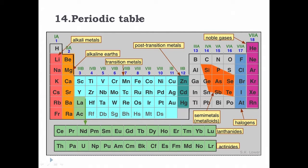Most of the elements we know on this earth are represented in this periodic table. The spectroscopic techniques we are going to discuss will apply to most of these elements, except the actinides, because many of them are radioactive. Otherwise, there are hundreds and thousands of spectrophotometric methods for the determination of these metals using spectrophotometry, which you will study in detail.